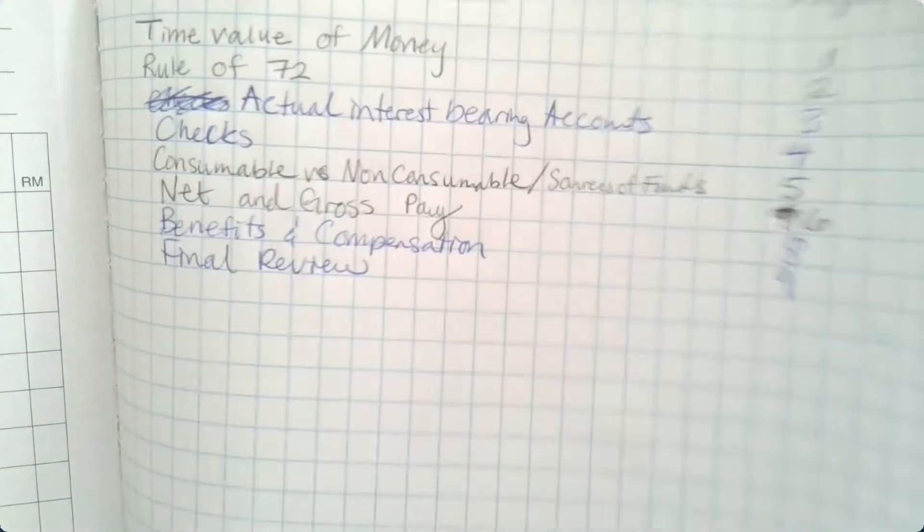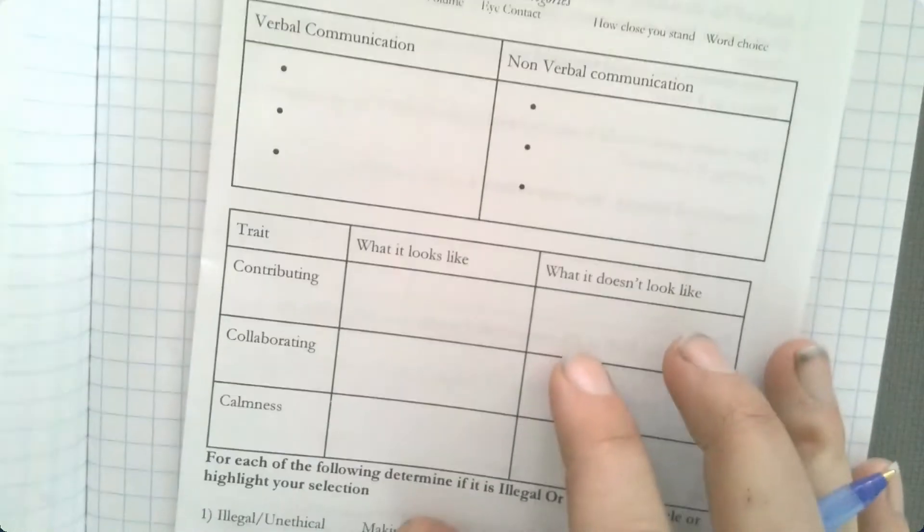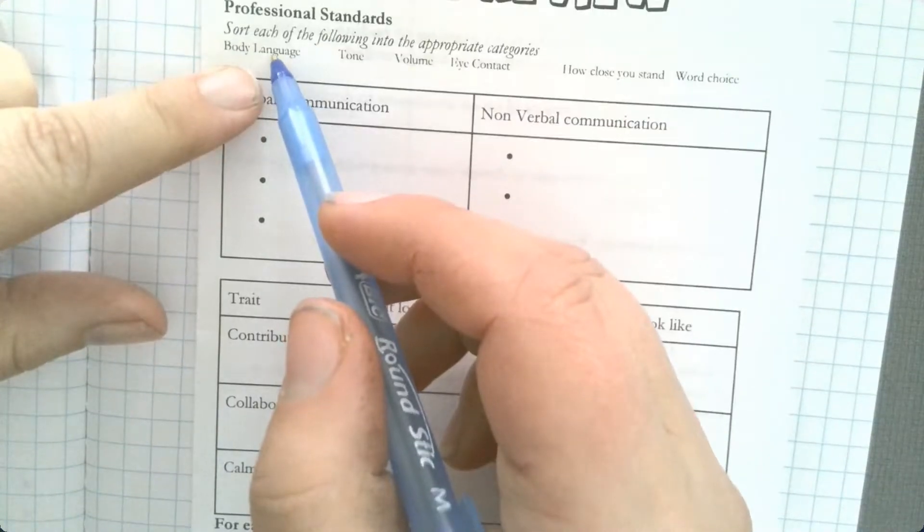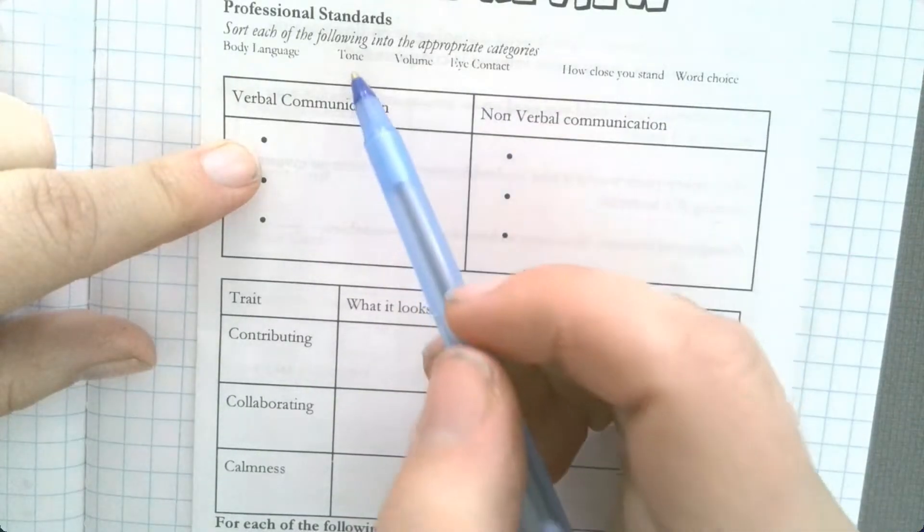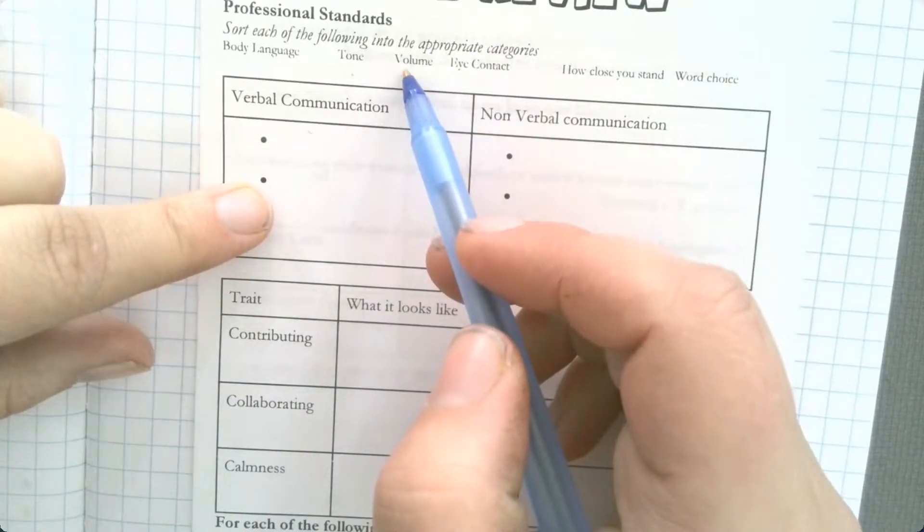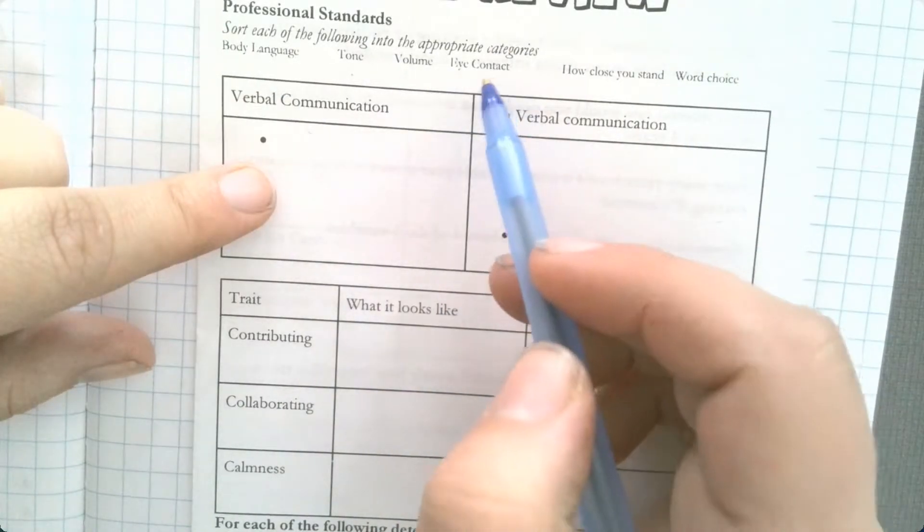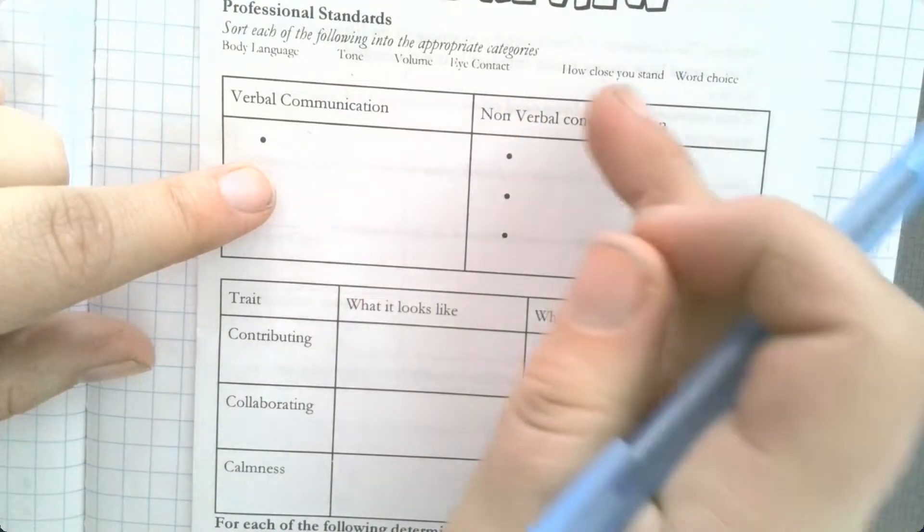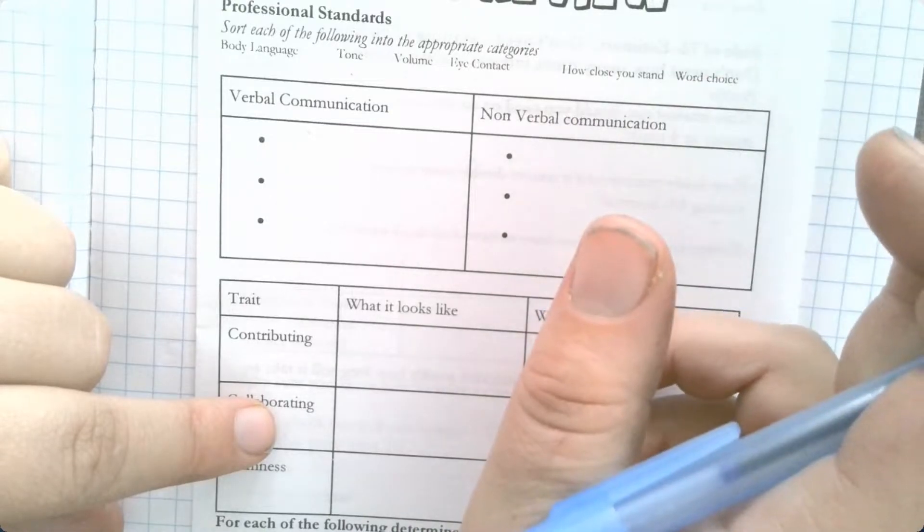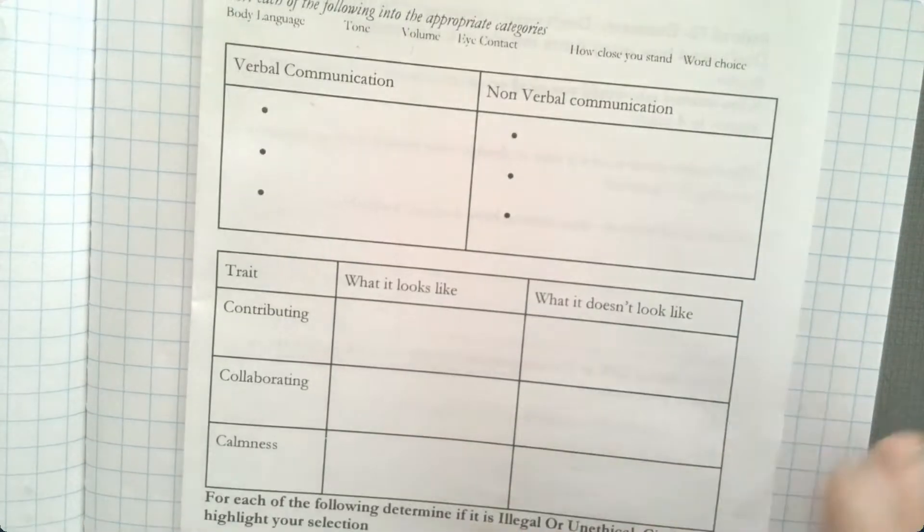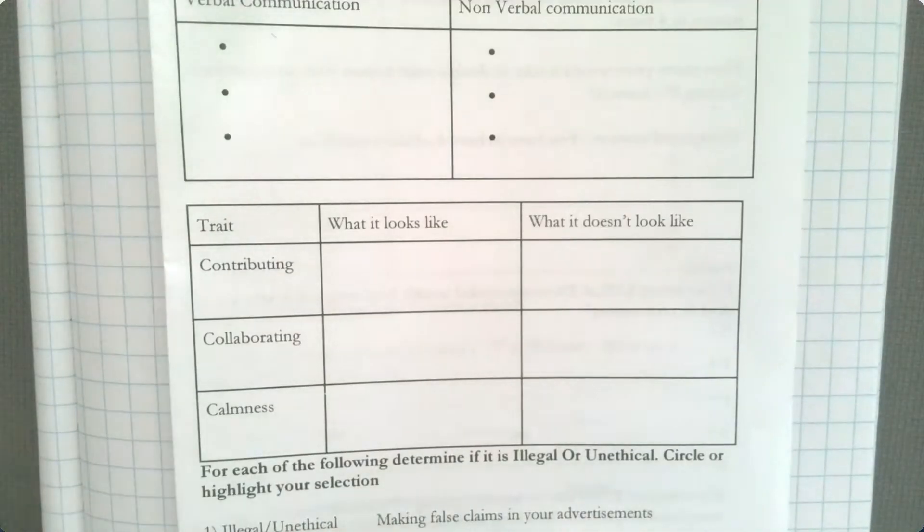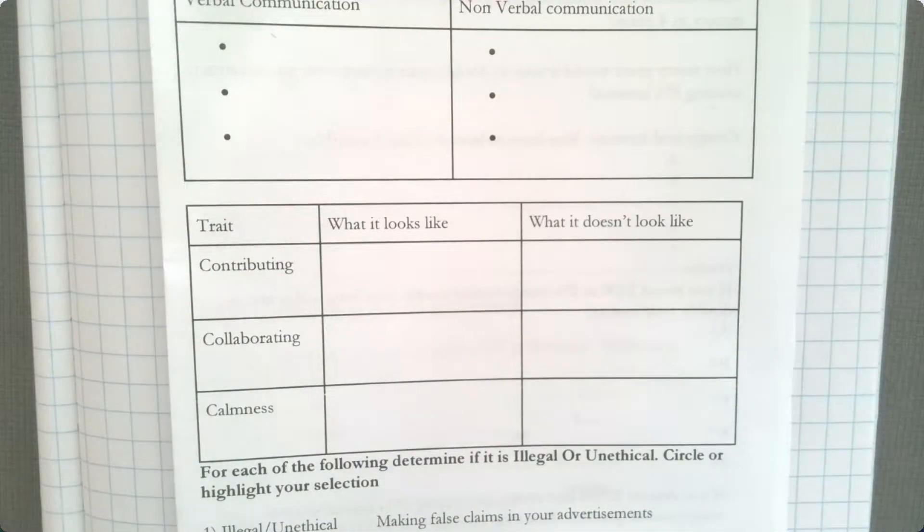All right, so this you're just going to sort. Where would body language go? Verbal or nonverbal? Put it there. Where would tone go? Put it there. Where would volume go? Put it there. Eye contact, good. What about how close you stand? What about word choice?